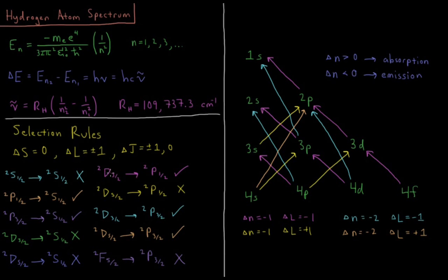Doublet D three-halves to doublet P one-half. Delta L equals minus one, delta J equals minus one. That's allowed. And delta S equals zero. Doublet D five-halves to doublet P one-half. Not allowed. That's delta J equals minus two. Five-halves to one-half. Doublet D three-halves to doublet P three-halves is okay. Doublet D five-halves to doublet P three-halves is okay.